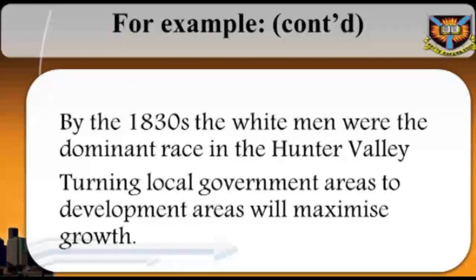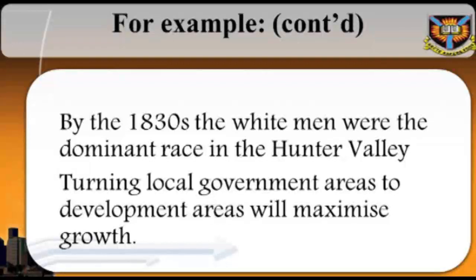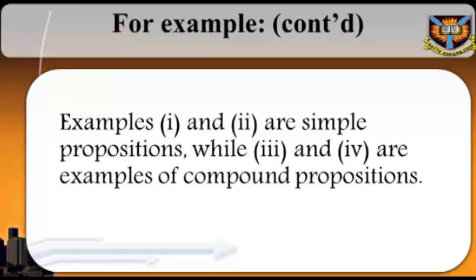After 1830, most resistance by the Koris was passive, although there were sporadic outbreaks of violence. Nevertheless, the two races could not live completely apart and growing contact was inevitable. (Copi et al., 2006) Fifthly, turning local government areas to development areas will maximize growth, because turning local government areas into development areas will depoliticize development as suspicions of neglect due to fear of ethnic domination in various states will diminish. (Cited from the African Guardian) From the above, examples 1 and 2 are simple propositions, while 3 and 4 are examples of compound propositions.